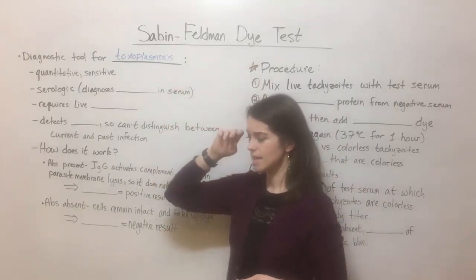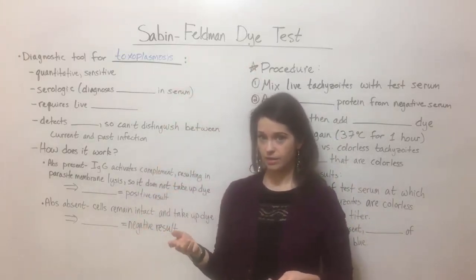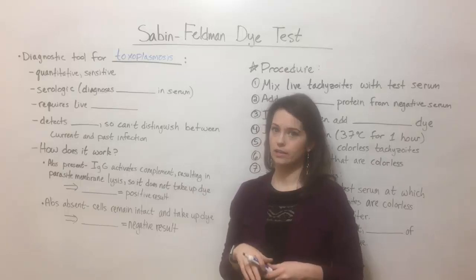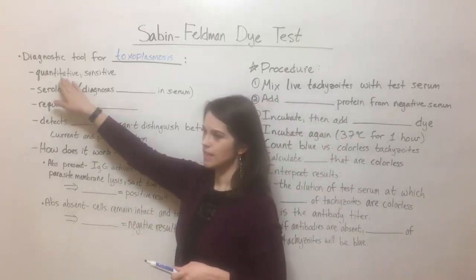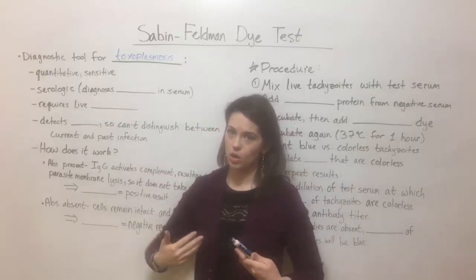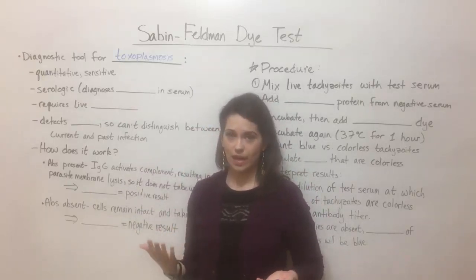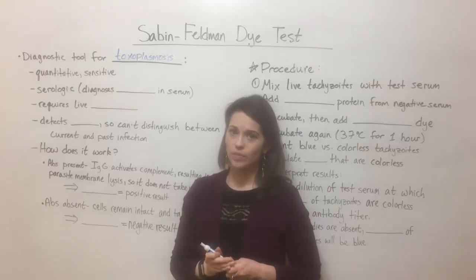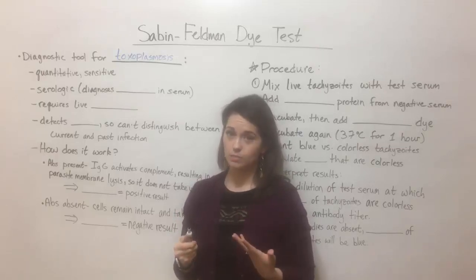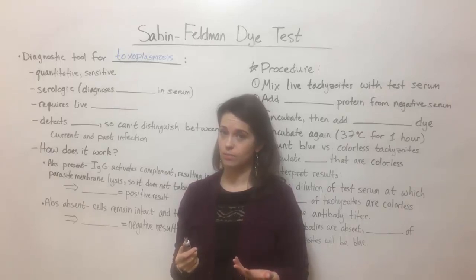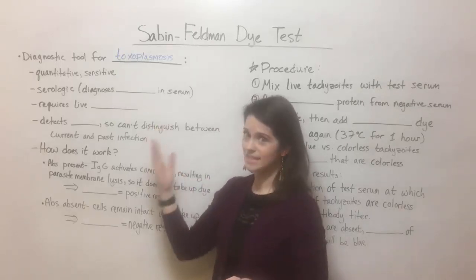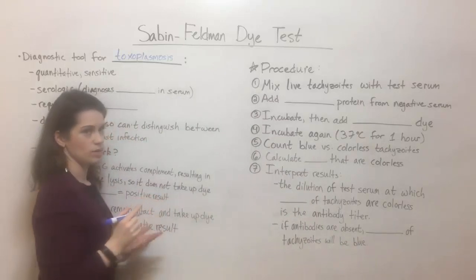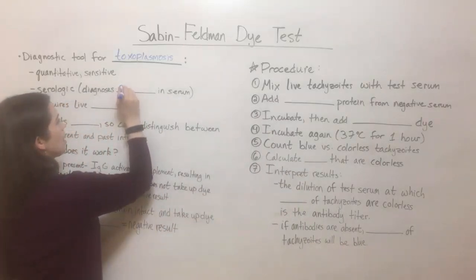The Sabin-Feldman dye test is a pretty quick method for determining if somebody has either a current or past infection of toxoplasmosis. It's a quantitative test, meaning that an antibody titer — how many antibodies are floating around in the blood to this pathogen — can be determined quantitatively. It's also quite sensitive; as little as 2 IU of antibodies per milliliter of blood can be measured this way. It's also a serologic test, meaning it diagnoses the presence of antibodies in the serum of the patient.